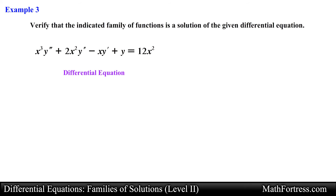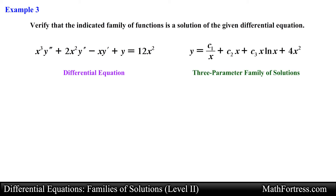The differential equation is x cubed times y triple prime plus 2x squared times y double prime minus x times y prime plus y equals 12x squared. The three-parameter family of solutions to verify is y equals c sub 1 over x plus c sub 2 times x plus c sub 3 times x times the natural log of x plus 4x squared. Notice that this general solution contains three parameters: c sub 1, c sub 2, and c sub 3. This three-parameter family of solutions is a general solution of the third-order ODE.